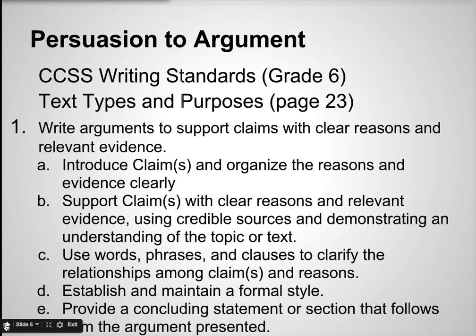The sixth page concludes with page 23 of the Common Core State Standards, which is the grade 6 writing standard under text types and purposes — anchor standard number one: writing arguments to support claims with clear reasons and relevant evidence. There are five supporting standards: a) introduce claims and organize the reasons and evidence clearly; b) support claims with credible sources demonstrating understanding of the topic or text; c) use words, phrases, and clauses to clarify relationships among claims and reasons; d) establish and maintain a formal style; e) provide a concluding statement or section that follows from the argument presented. The secondary ELA Common Core State Standards and anchor standards for the writing strand of argument are on pages 23 and 26, grades 6 to 12, and the speaking and listening strand of argument on pages 28 to 29, grades 6 to 12.